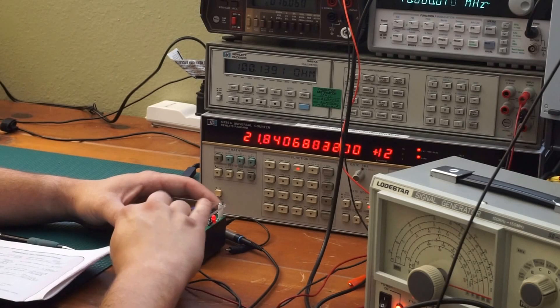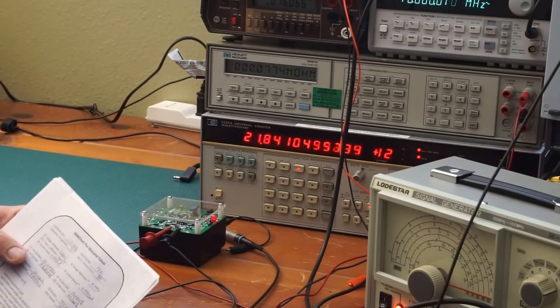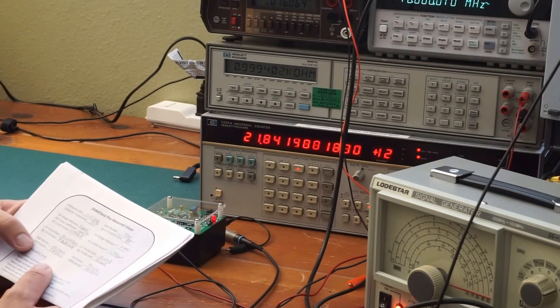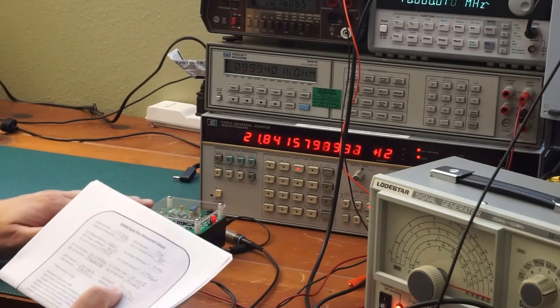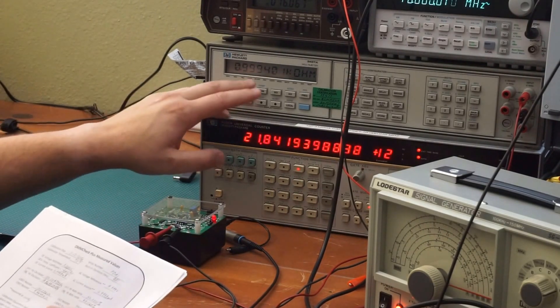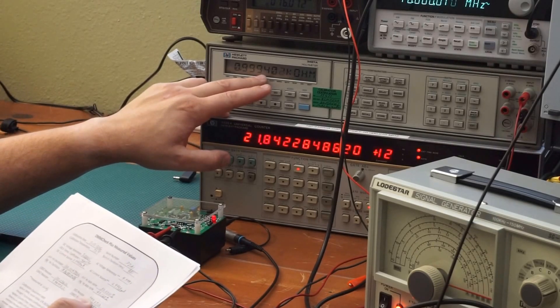Next one is the one kilo ohm resistor. And the one kilo ohm stated value on this is 999.27 ohms. And this is 999.4 ohms. So very close.